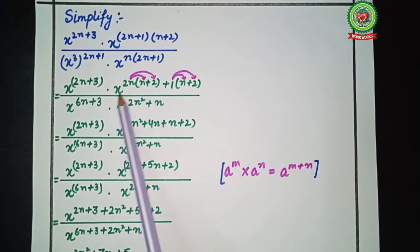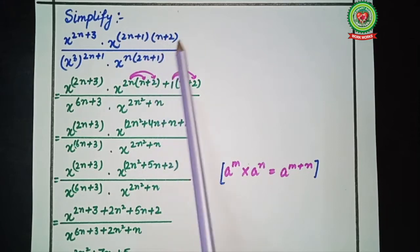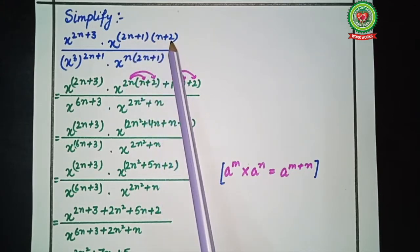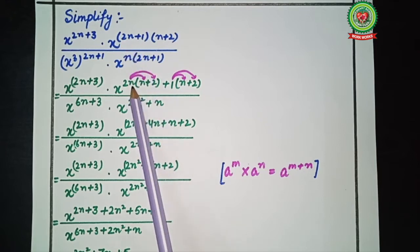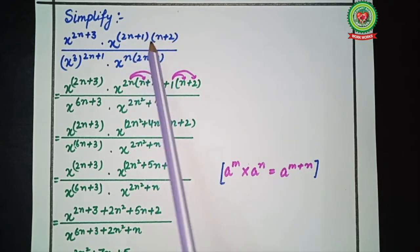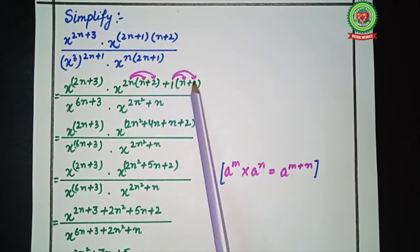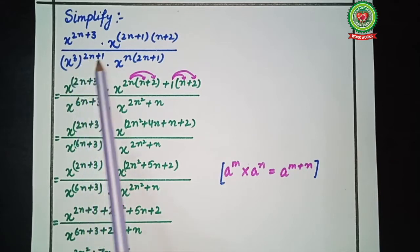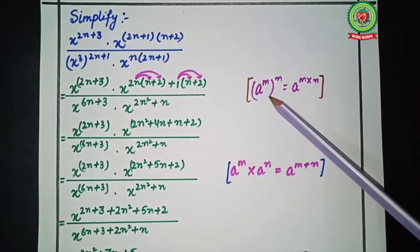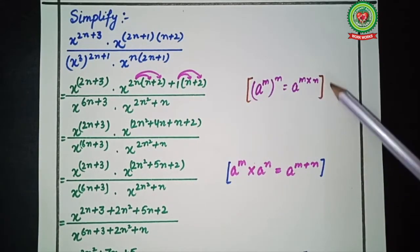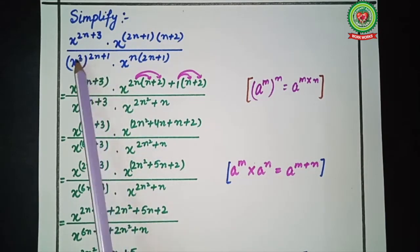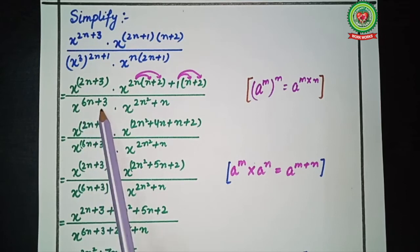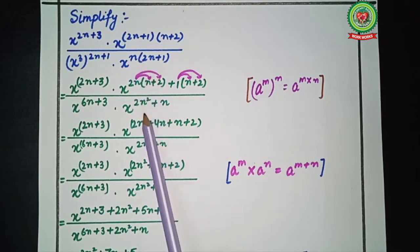We put x raised to power 2n plus 3 in a bracket. Now you can see that two brackets are there, which means we have to solve them with the arrow method. So we will write here 2n bracket n plus 2, after that plus 1 bracket n plus 2, and apply the arrow method. In the denominator, x raised to power 3 bracket 2n plus 1. We apply the rule a raised to power m bracket n equals a raised to power m multiplied by n, so after multiplying we get x raised to power 6n plus 3 dot x raised to power 2n squared plus n.